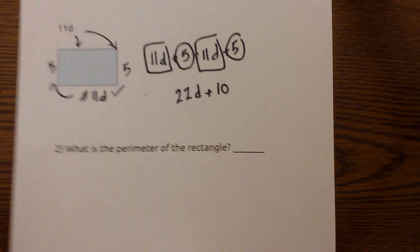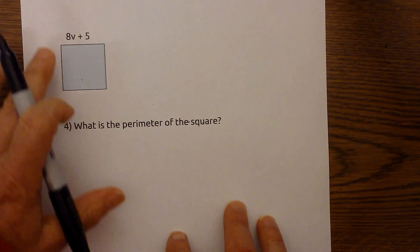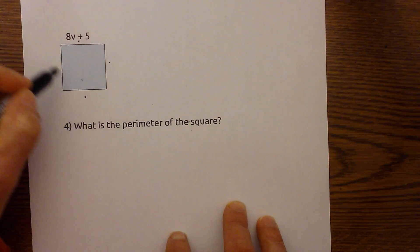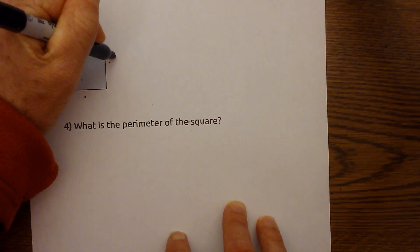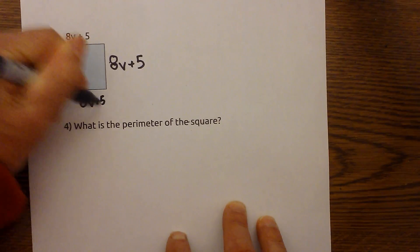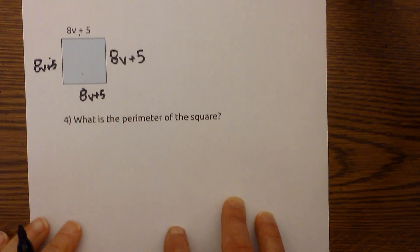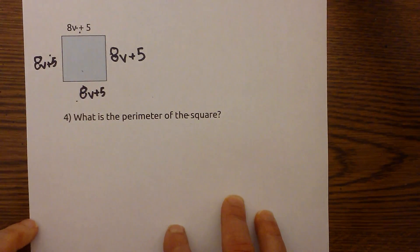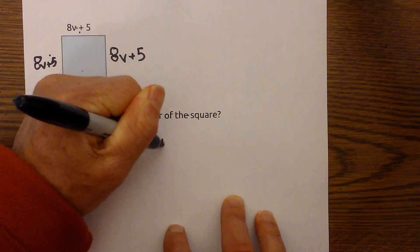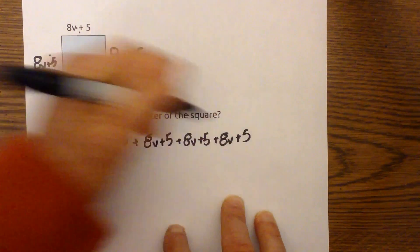And finally, let's work one more — what is the perimeter of this square? We need to add the four sides. A square has equal sides, so I can fill in 8v plus 5 on each side. Now I write that out: 8v plus 5, plus 8v plus 5, plus 8v plus 5, plus 8v plus 5, because the perimeter is adding the four sides together.